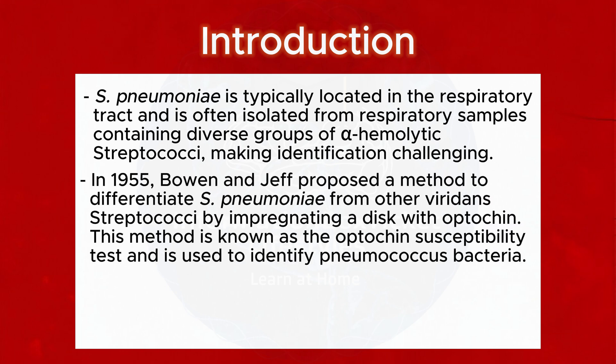In 1955, Bowen and Jeff proposed a method to differentiate S. pneumoniae from other viridans streptococci by impregnating a disc with Optochin. This method is known as the Optochin Susceptibility Test and is used to identify pneumococcus bacteria.